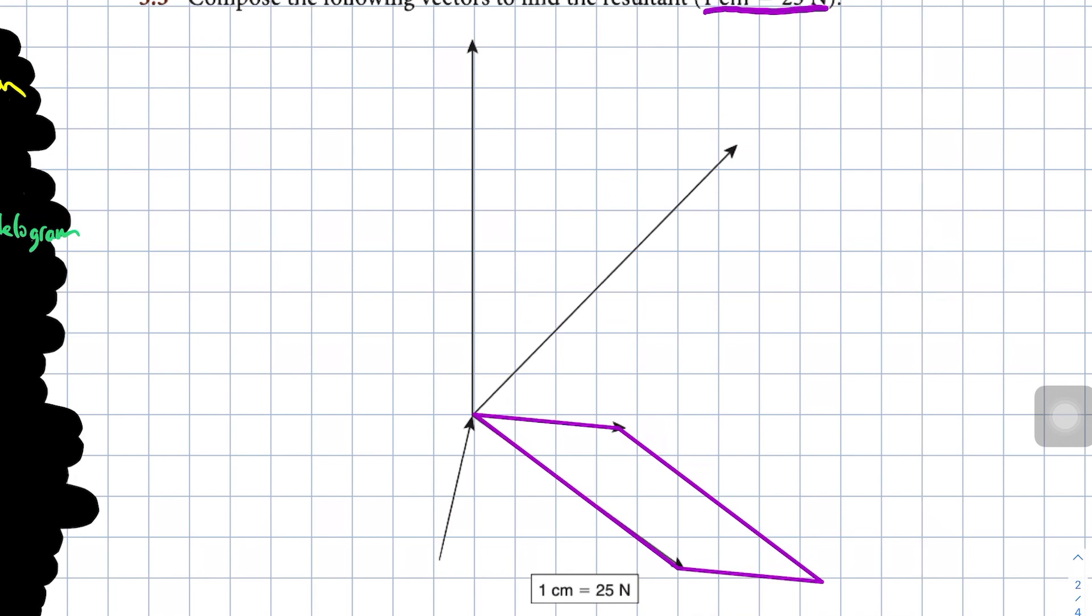Now I have my new parallelogram and I need to draw the resultant vector. And so we just go diagonal to diagonal and let's get rid of those guidelines. And there we have our resultant.